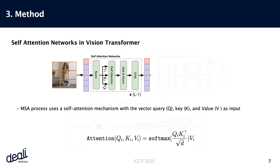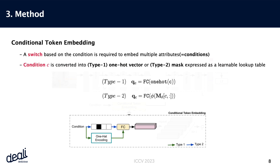The multi-headed self-attention process employs a self-attention mechanism, taking input in the form of vector query, key, and value. In our approach, we introduce conditional token embedding to handle multiple attributes effectively. It receives the condition information, also called attribute information, as input. Its primary role is to train essential features, focusing on selecting relevant local regions within the image for attribute comprehension and fusion.